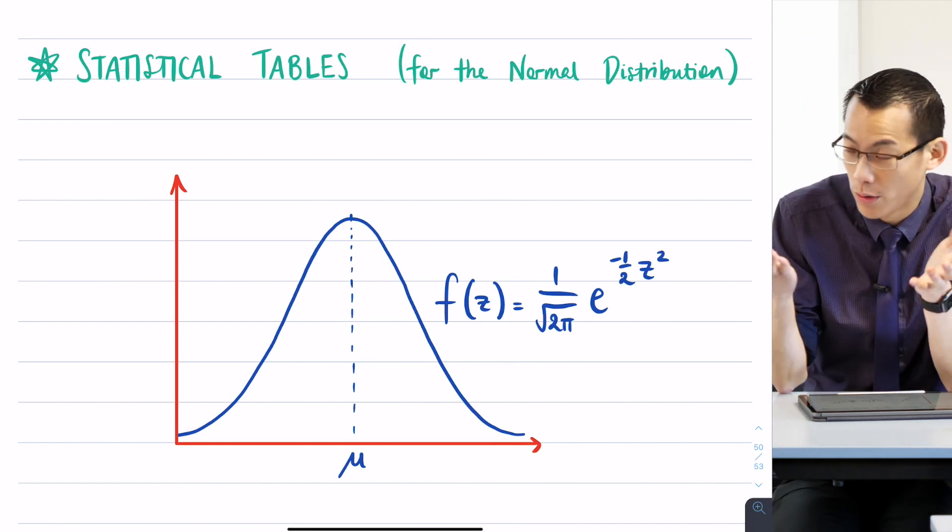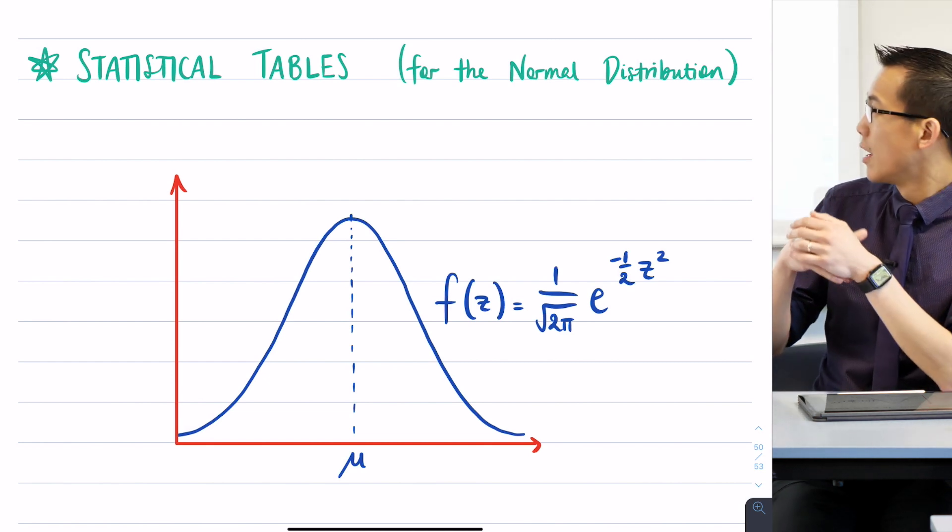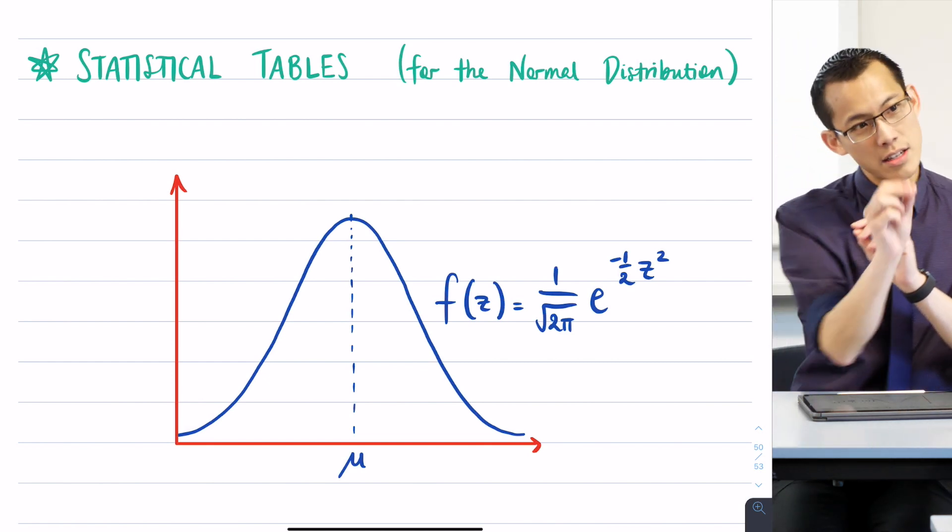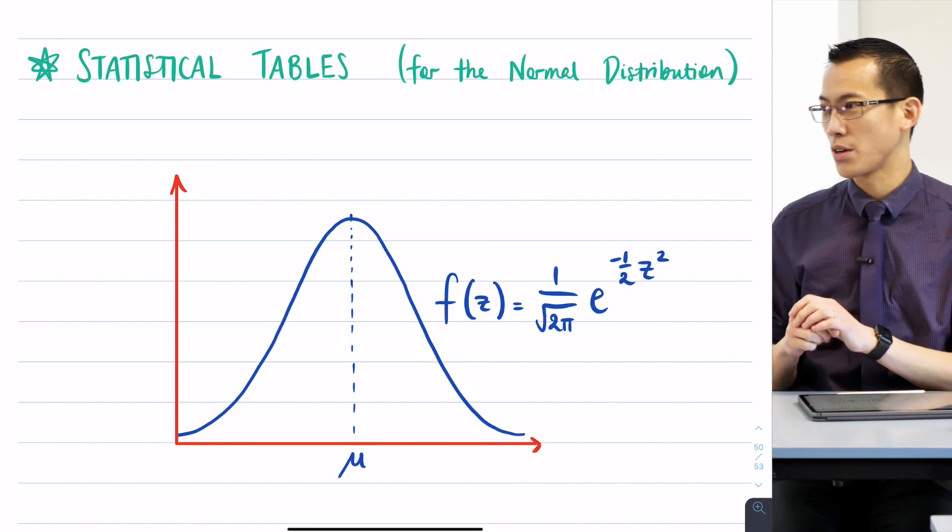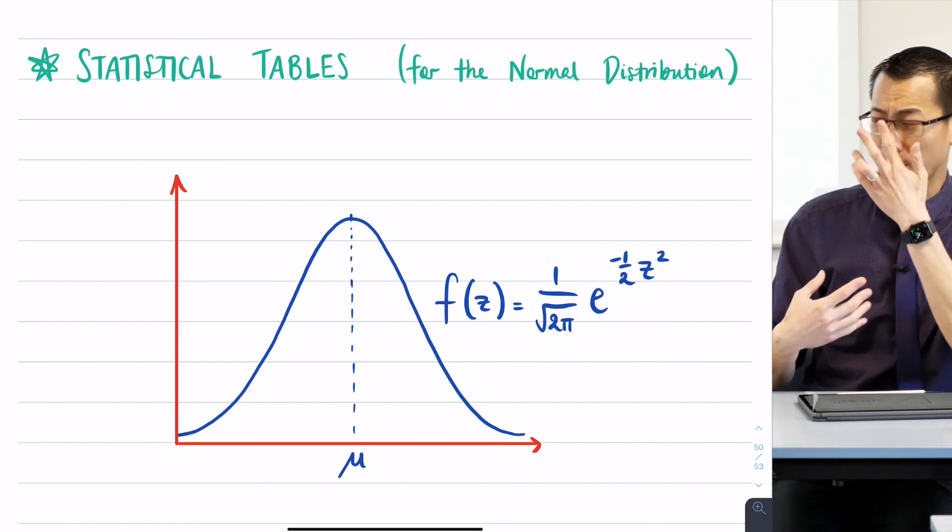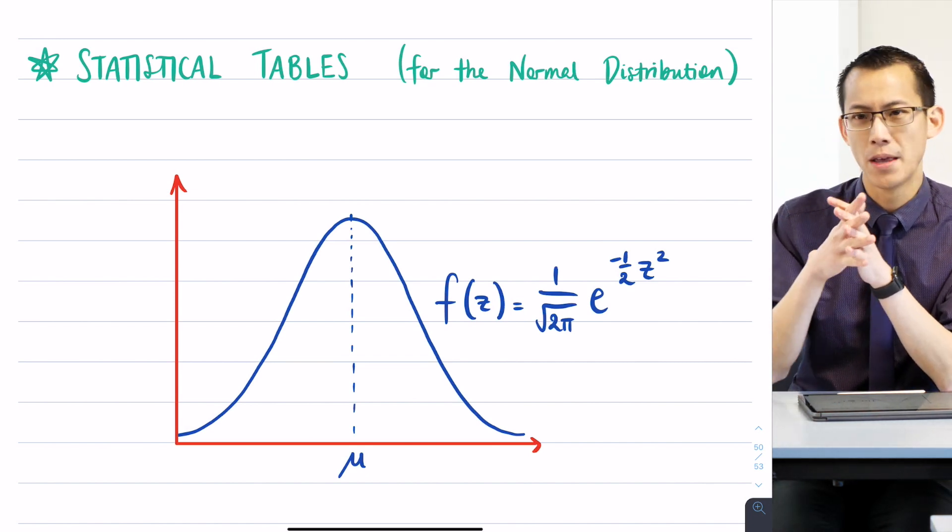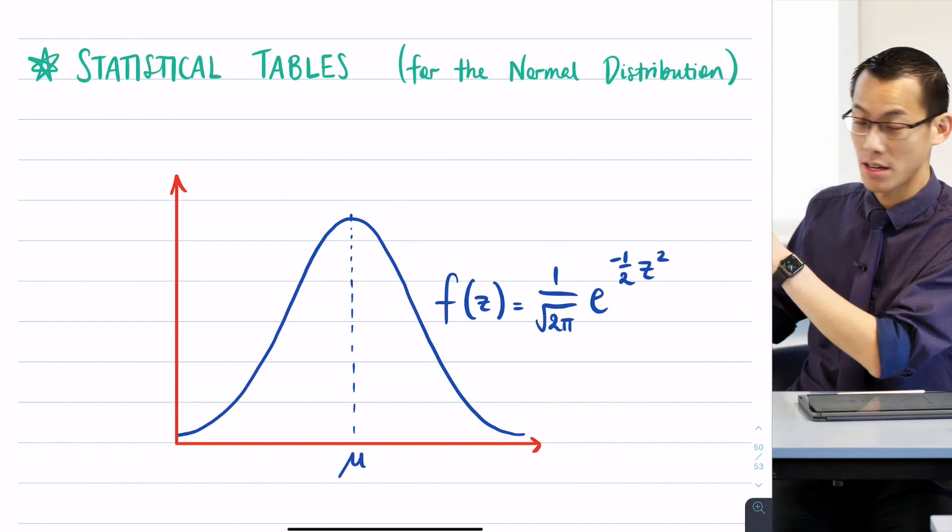This is the normal distribution, the bell curve. We're pretty familiar with it now. It is a phenomenally useful model because it represents the probability density function of pretty much everything that is the result of a lot of independent processes.